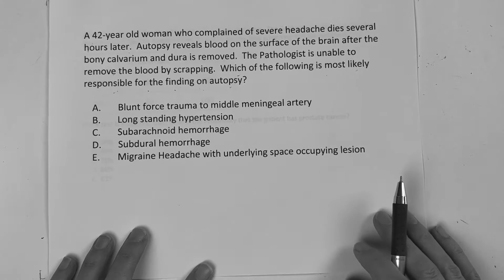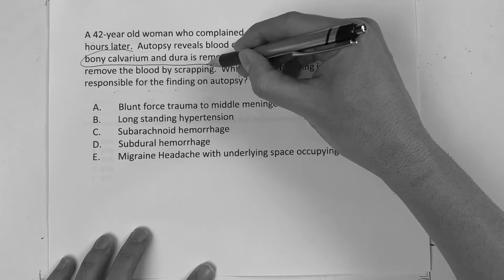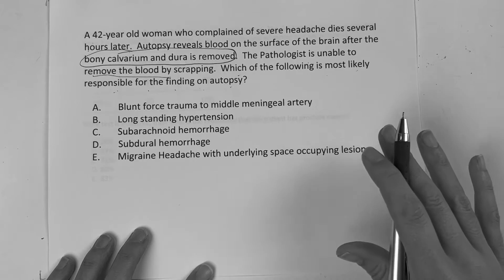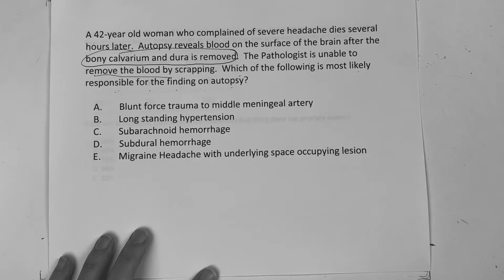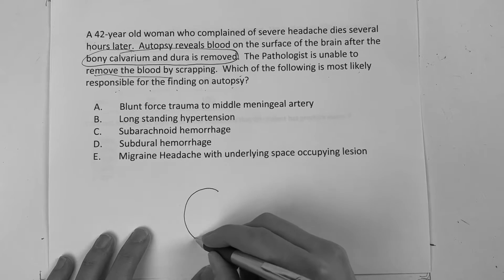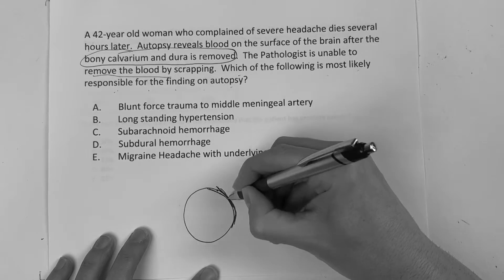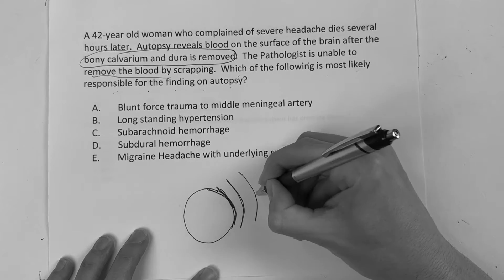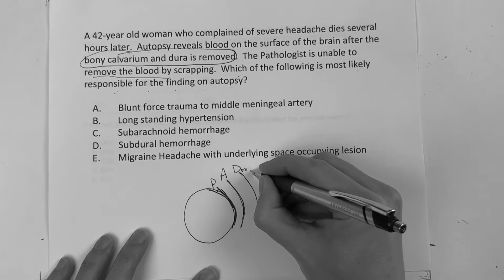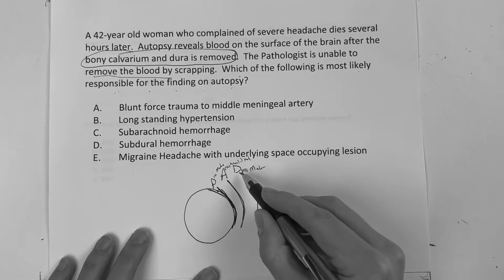You have to have some knowledge of the different types of hemorrhages in the brain. The key to this question is that after they removed the skull and dura, they had blood they were looking at, but they couldn't scrape it away. Going from outside in, you have three layers: the dura mater, the arachnoid mater, and the pia mater.